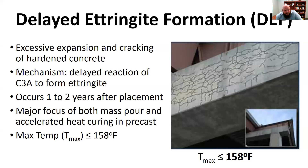Another type of cracking prevalent in mass pours is delayed ettringite formation, also called DEF. This is a mechanism where if the concrete gets above about 158 to 162 degrees Fahrenheit, you're going to start getting cracking. You have to be very careful that the maximum temperature inside the middle of that concrete does not get too high, because once it does, the C3A in the cement will stop reacting.